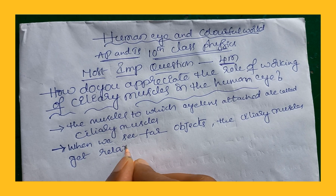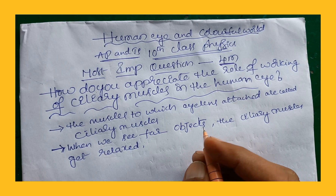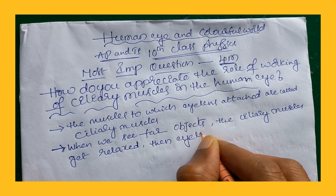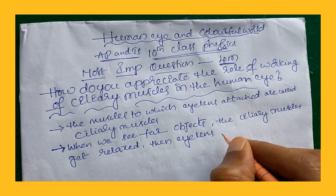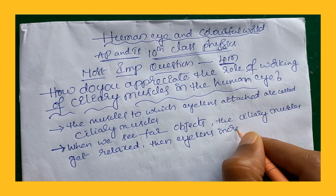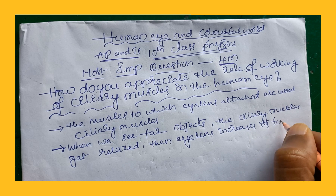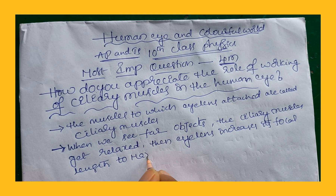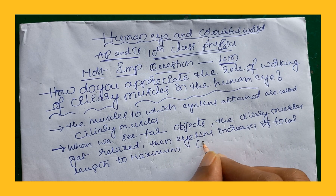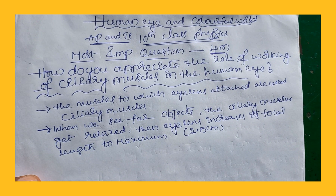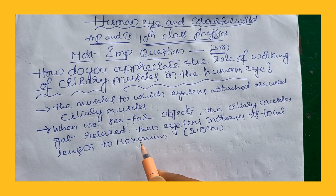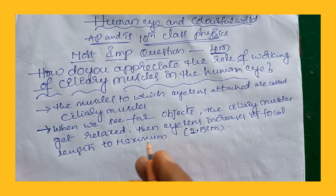the ciliary muscles get relaxed. The eye lens, being of convex nature, increases its focal length to maximum. The maximum focal length of the eye lens is 2.5 cm. This is also equal to the image distance in the human eye, which is also 2.5 cm. So when we see far objects, ciliary muscles get relaxed and the eye lens increases its focal length to maximum.